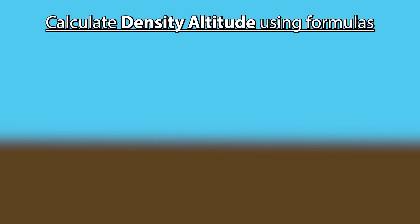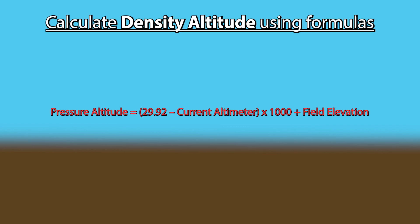First, you will need to calculate the pressure altitude by using this formula. Take the standard atmospheric pressure of 29.92 inches of mercury, subtract the current altimeter setting that you can get from your meter or ATIS, then multiply that number by 1000 and add your field elevation.